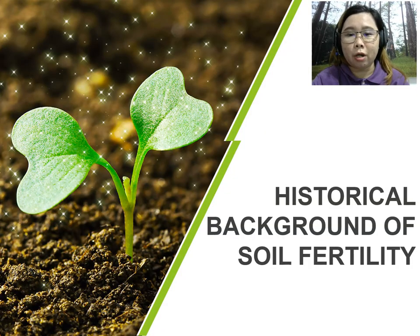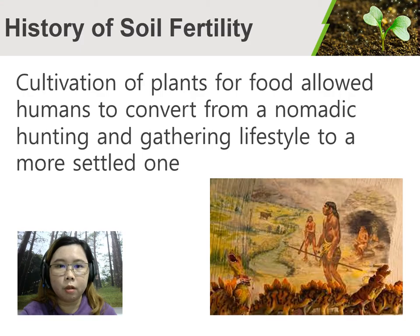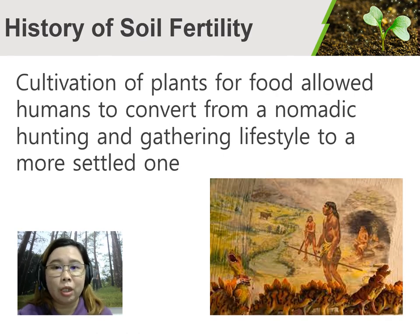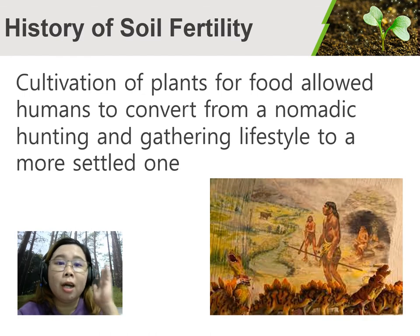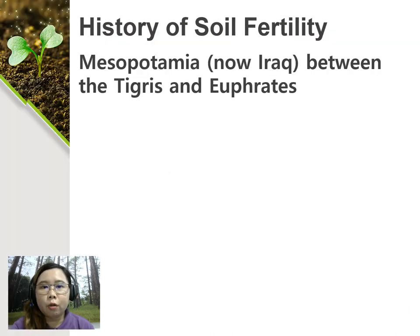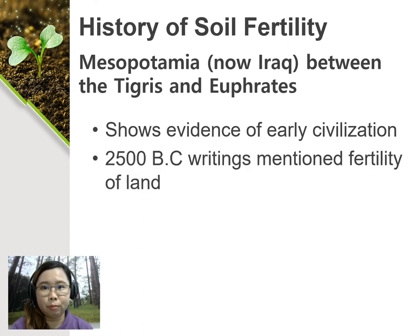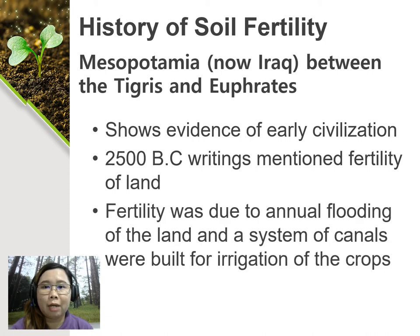Let's begin with the historical background of soil fertility. In the past, during the time of our ancestors, cultivation of plants for food allowed humans to convert from a nomadic hunting and gathering lifestyle to a more settled one. According to 2500 BC writings of Mesopotamia — now Iraq, the land between the Tigris and Euphrates — there is evidence of early civilization wherein the fertility of the land was mentioned, and that fertility was due to annual flooding of the land.